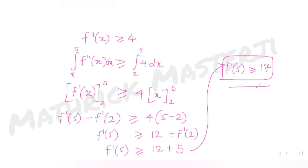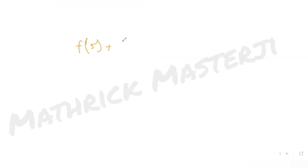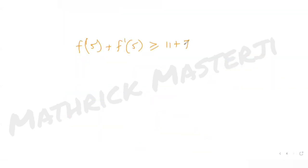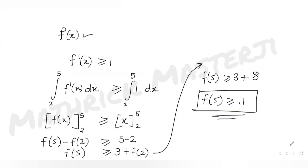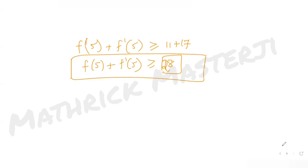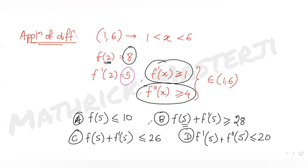Since f'(2) = 5, we get f'(5) ≥ 12 + 5 = 17. Now adding both inequalities together: f(5) + f'(5) ≥ 11 + 17 = 28. Since both are greater than or equal, we can add them, giving f(5) + f'(5) ≥ 28.